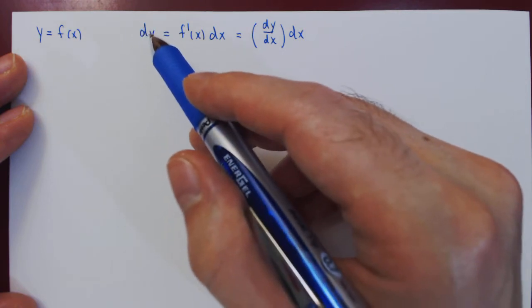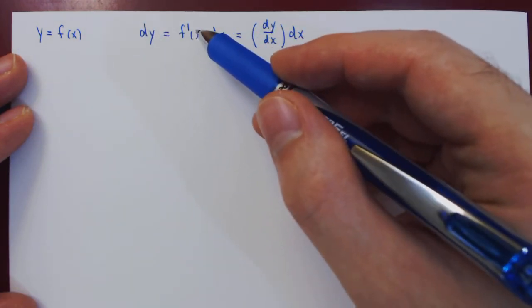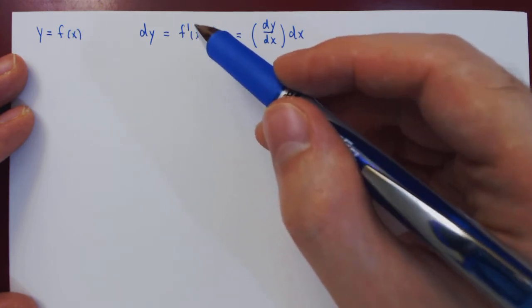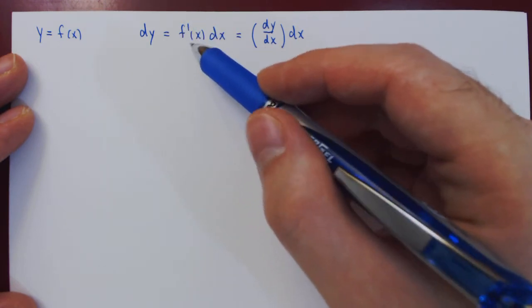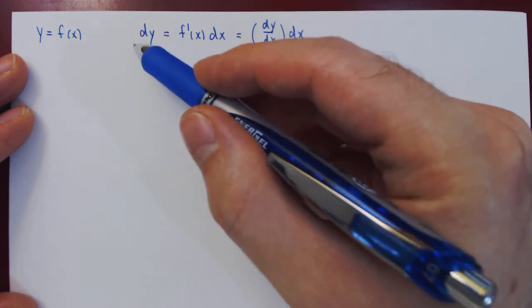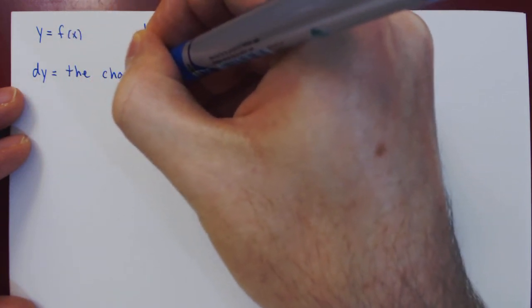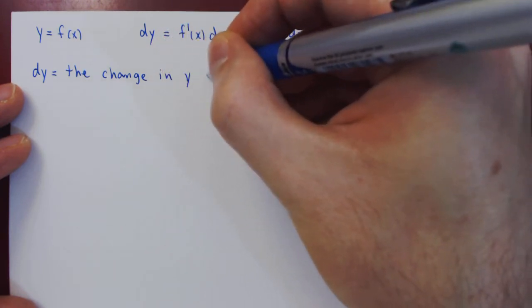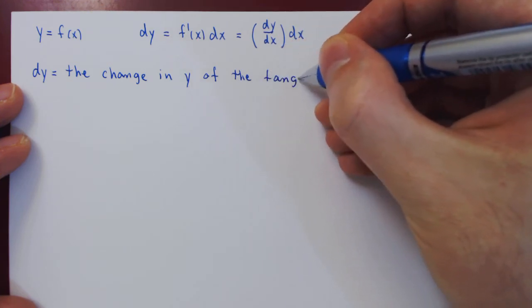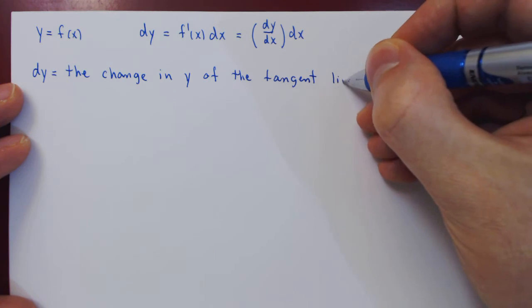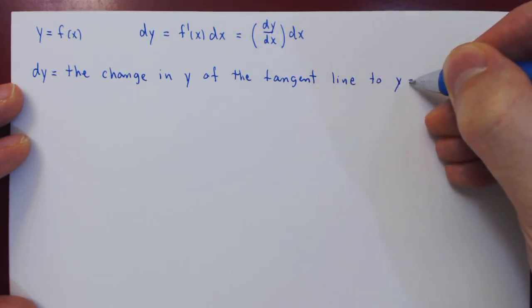But we can look at dy now in a different way. The derivative of the function at x is by definition the slope of the tangent line to the function at x. And so if we multiply the slope of the line by the change in x, we obtain the change in y of the line. So dy, the differential of the function, is equal to the change in y of the tangent line to the function y equals f of x.